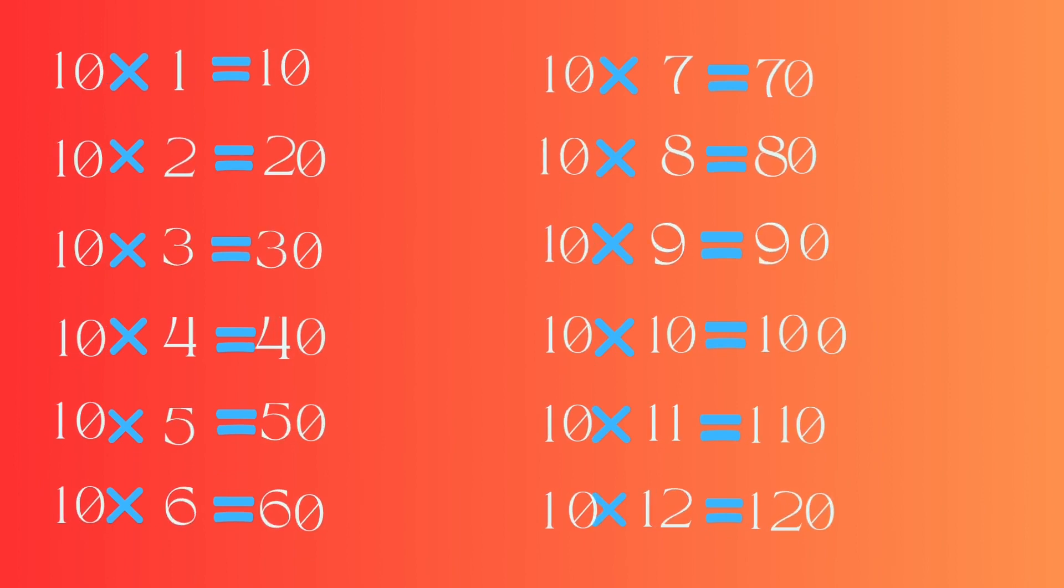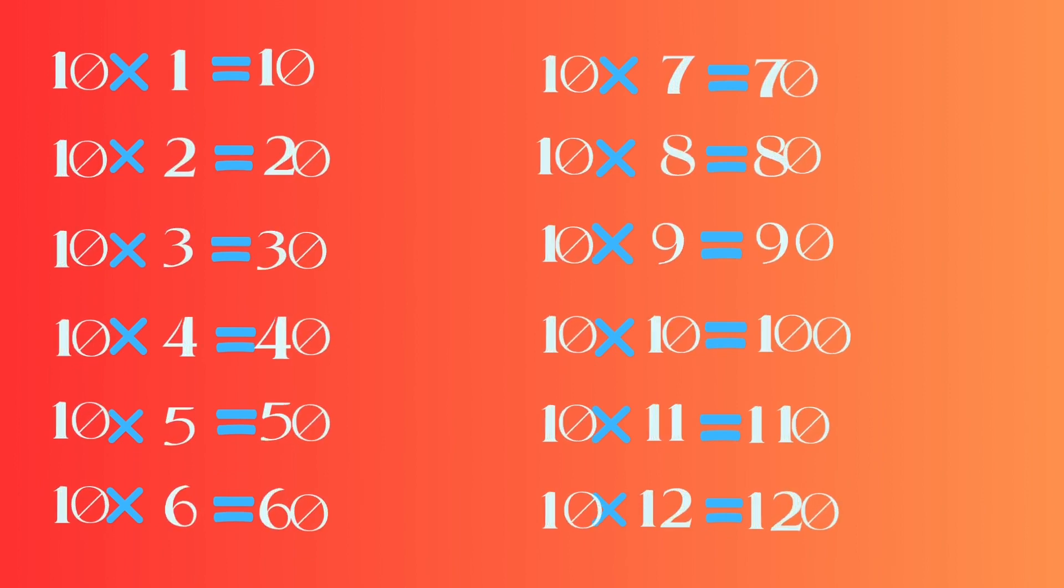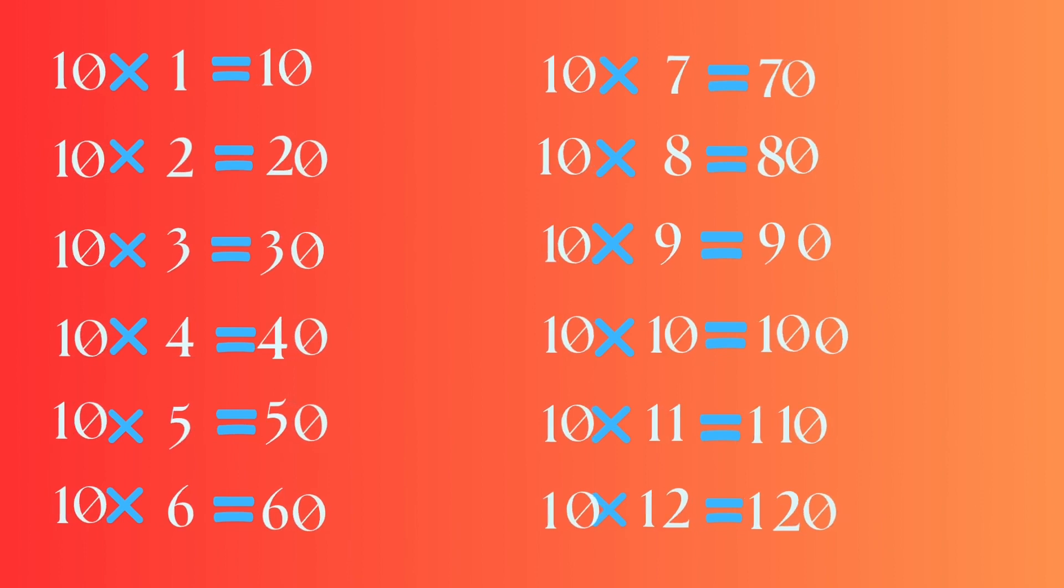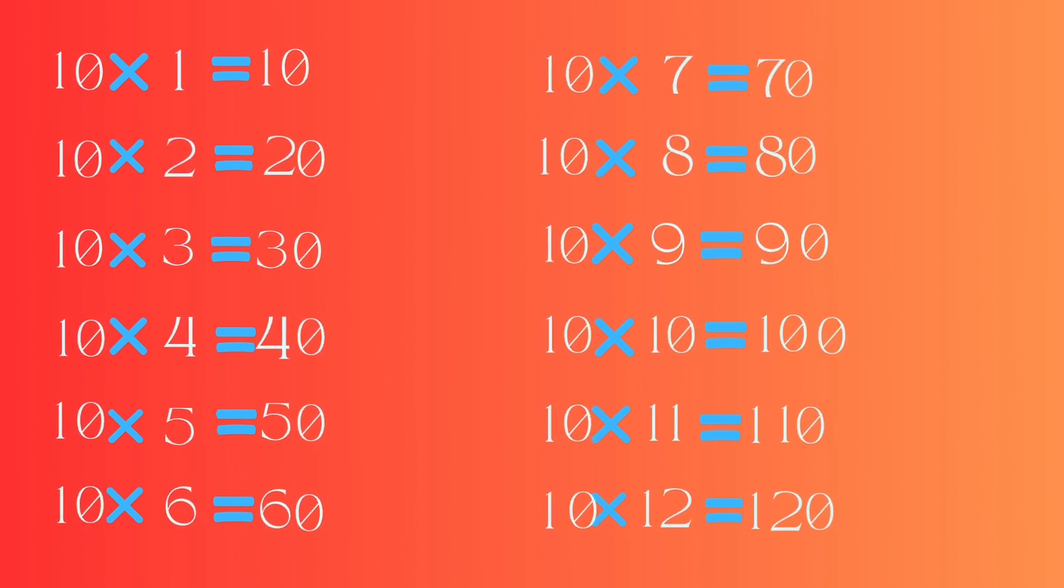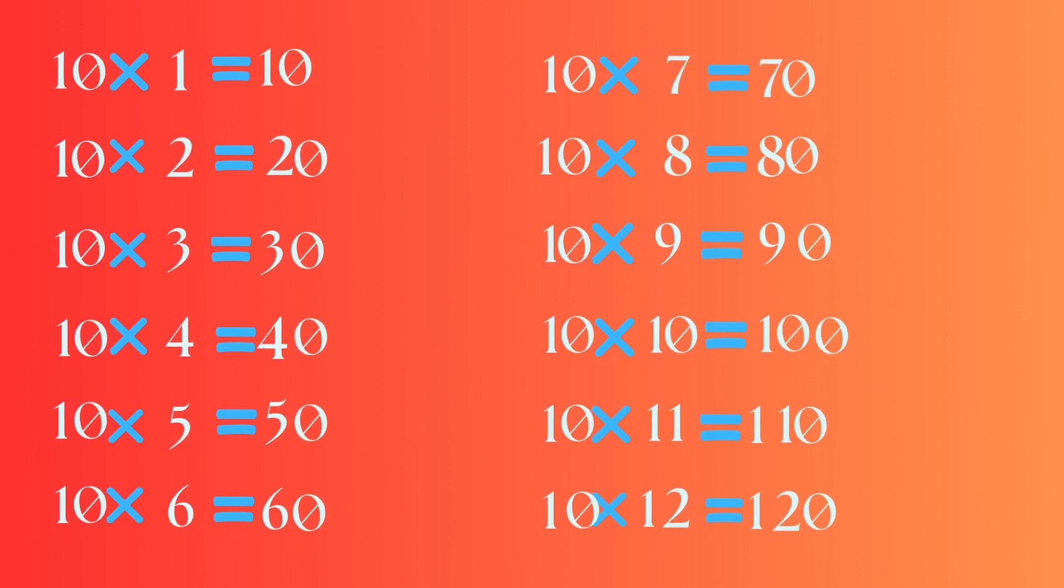10 twos are 20, 10 threes are 30, 10 fours are 40, 10 fives are 50, 10 sixes are 60.